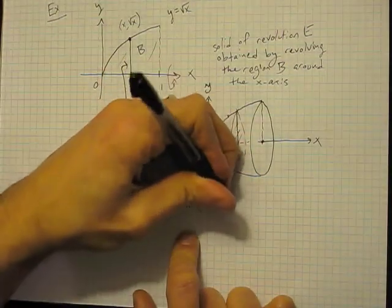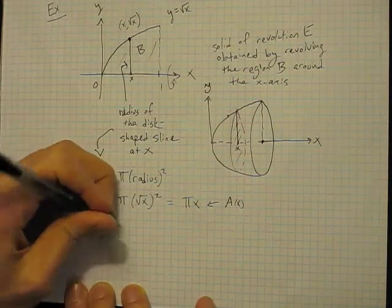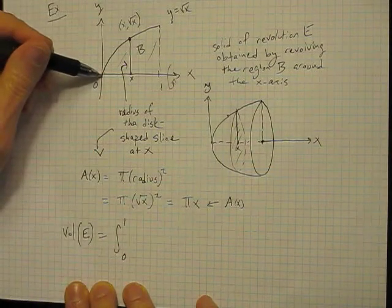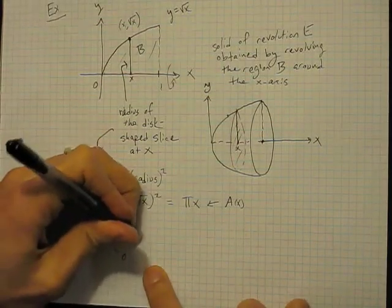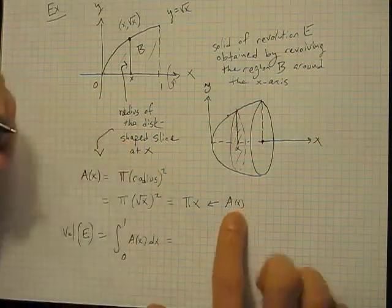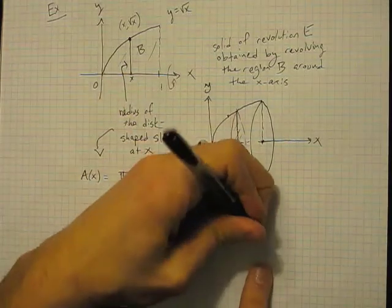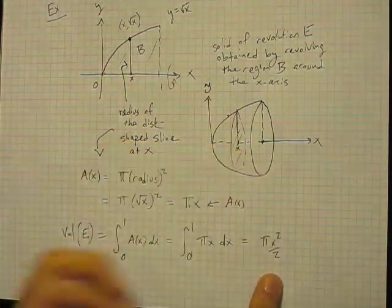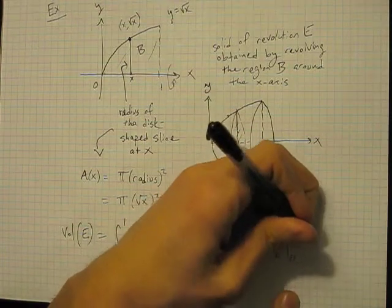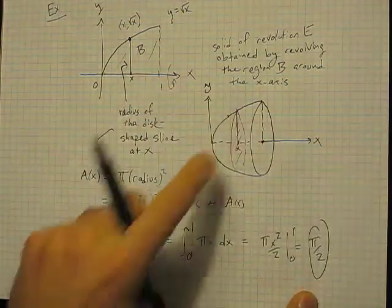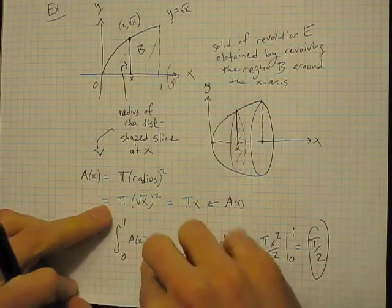So A(x) = πx is our area function. The volume of E equals the integral from 0 to 1 of A(x) dx = ∫₀¹ πx dx. Integrating gives π·x²/2 evaluated from 0 to 1. Plugging in 1 gives 1/2; plugging in 0 gives 0. So the volume is π/2 — that's the answer in whatever cubic units apply.